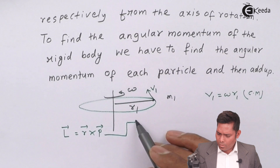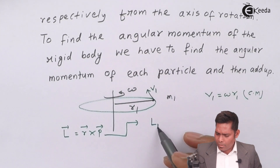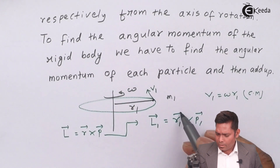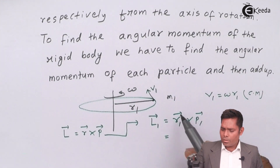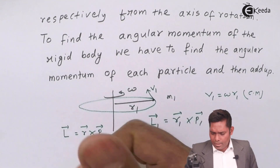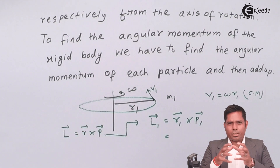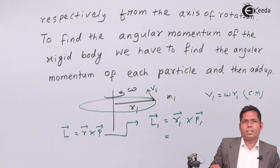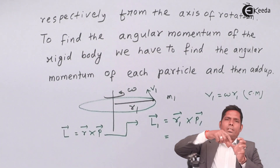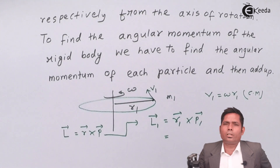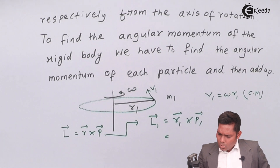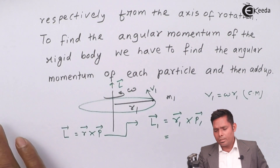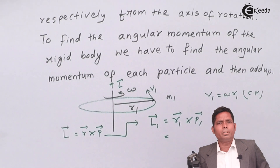Applying this formula, L1 for the first particle is R1 cross P1. As the object rotates in anticlockwise sense about the axis, all particles will have angular momentum pointing along the axis — along the k-cap direction or z-axis. So all particles have the same direction for their angular momentum vector, though different magnitudes.